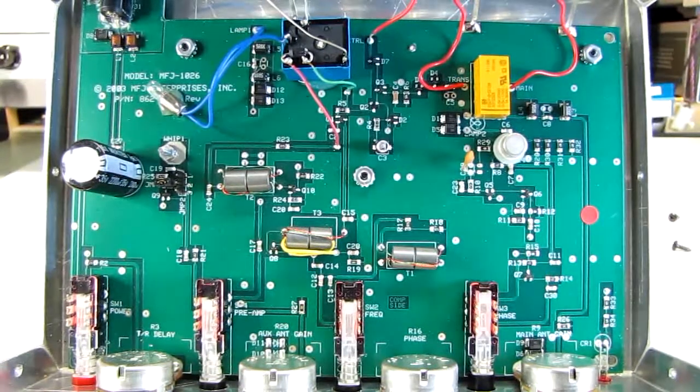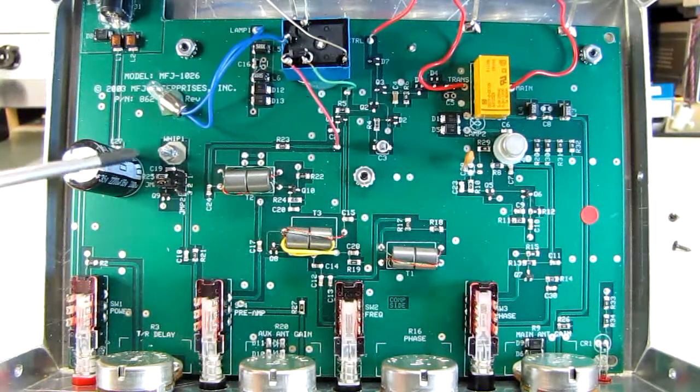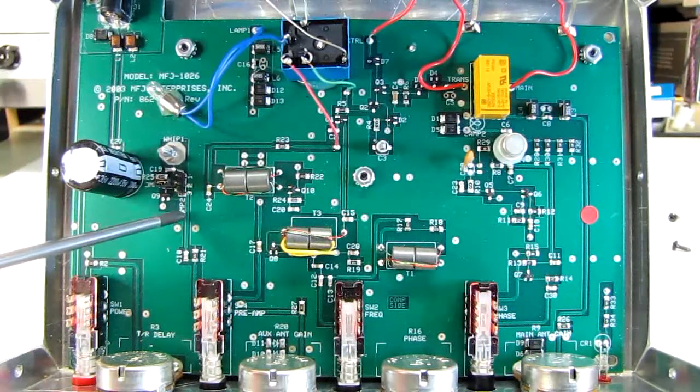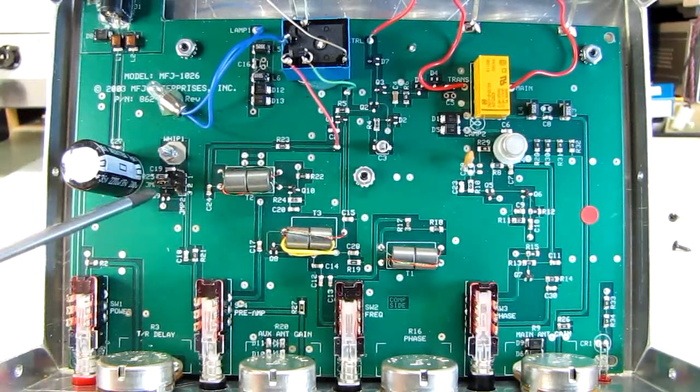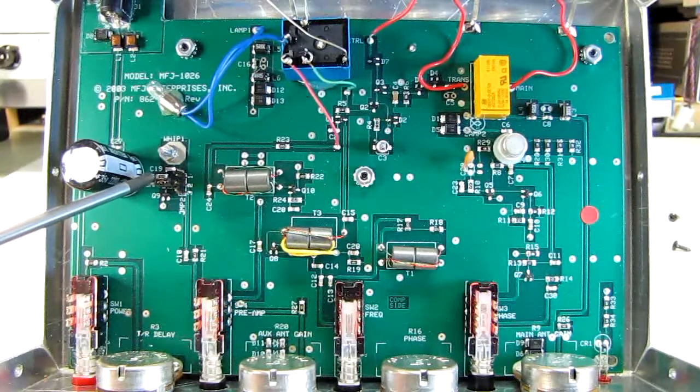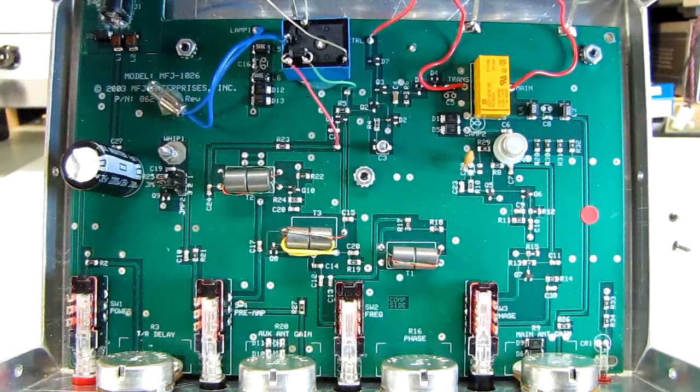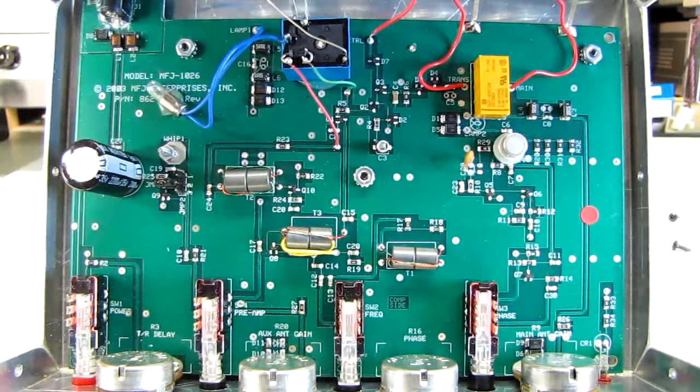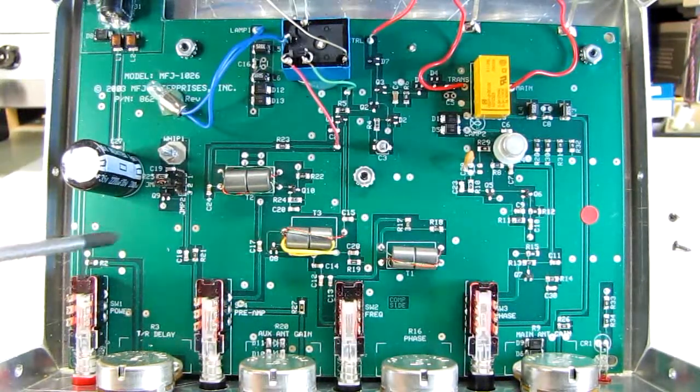One of the first things you're going to want to do when you buy one of these is move the jumper from the two pins here on jumper number two and move them over to jumper number one. That connects the external antenna connector or the auxiliary antenna connector to the SO239 on the back of the unit.